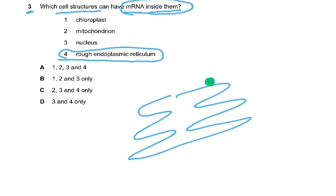The mRNA comes and attaches to the ribosome on the outside, so mRNA is not inside the rough endoplasmic reticulum — we cannot include 4. The answer to question 3 is B: one, two, and three only. mRNA can be inside the chloroplast because it has its own DNA and ribosomes. Mitochondria also have DNA and ribosomes. The nucleus contains mRNA because transcription — DNA to mRNA — takes place there. In both chloroplasts and mitochondria, transcription and translation both take place.